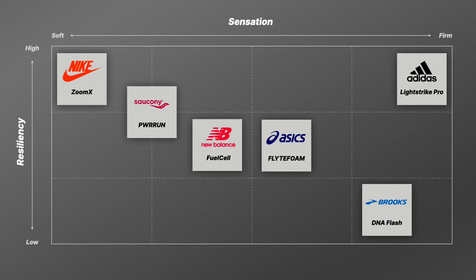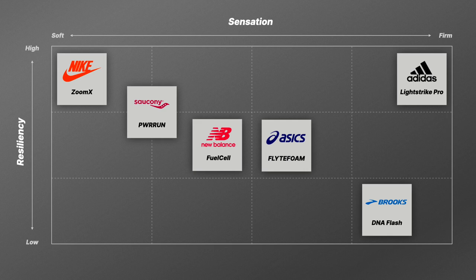Brooks falls in a very firm feeling foam with very low resiliency. That's not a negative — Brooks knows their customer and has been very clear about what DNA Flash is. It hasn't changed much and has been consistent across generations. Brooks is trying to develop a super shoe with a super foam that has a much more traditional ride. If everything else on the matrix feels too extreme or too new school, Brooks offers tried-and-true running shoe feel with modern super foam benefits, particularly in the Hyperion lines.